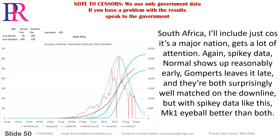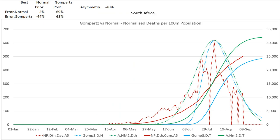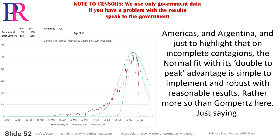South Africa — a major nation that gets a lot of attention. Again spiky data. Normal shows up reasonably early; Gompertz leaves it late. They're both surprisingly well matched on the downline, but with spiky data like this the Mark I eyeball is better than both. Americas and Argentina — on incomplete contagions, the normal fit with its double-to-peak advantage is simple to implement and robust with reasonable results, rather more so than Gompertz here. Which raises the issue of an enthusiast who finally uses a country he can use Gompertz on, and likely wipes out the evidence of fraud in the process.